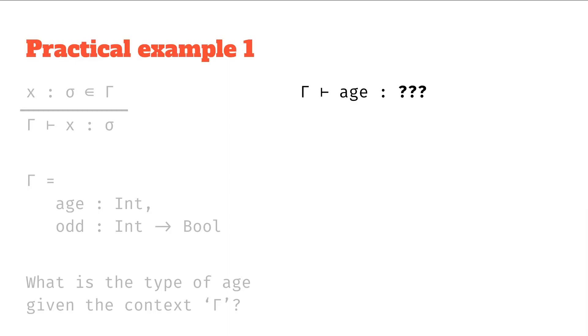Then if we look at our rule, well, this actually looks a lot like the bottom of our rule on the top left, where we have from the context gamma, it follows that x is type sigma. We want from the context gamma, it follows that age has type what.